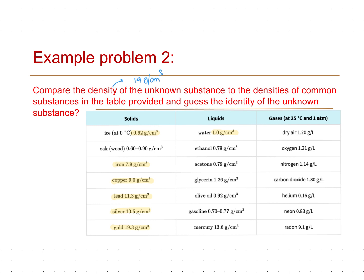Now, what if the object is an irregular shaped one, like a bolt? Because of its irregular or unsymmetrical shape, it is extremely difficult to use a mathematical formula to find the volume of this object. So how can we determine the volume, and then the density, of such an irregularly shaped object?